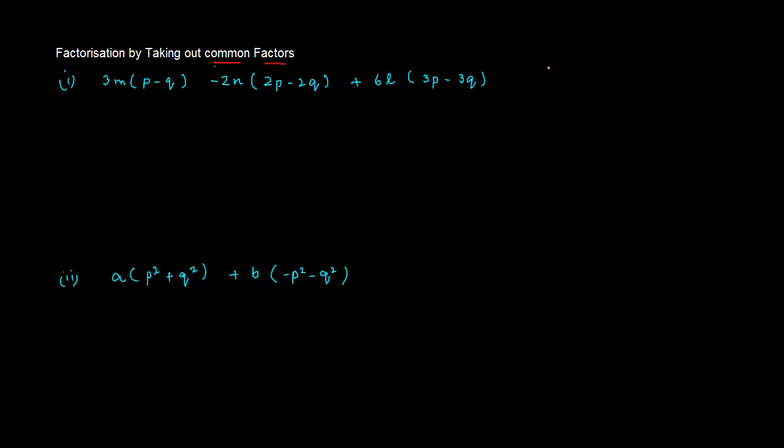Now friends, what happens is, many times you get something like this. Some variable A which is multiplied by B, and the same variable A multiplied by C. Based on whatever we have learned, we know that A into B, and then A into C, is equal to A into B plus C, right?